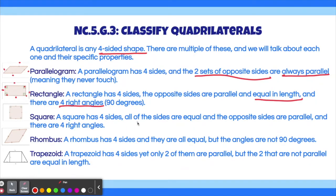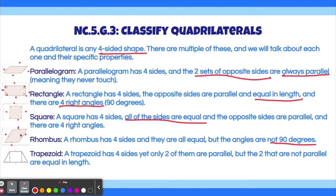Now we have a square. A square has four sides, all sides are equal, the opposite sides are parallel, and there are four right angles. The most distinguishable fact about a square is that all sides are equal: one, two, three, and four are all the same length, and there are four right angles, just like a rectangle. So a square is essentially a rectangle where all the sides are the same. A rhombus also has four equal sides, but the angles are not 90 degrees. So a rhombus has all equal sides like a square, but it is not a square because it doesn't have 90-degree angles. A trapezoid has four sides, but only two of them are parallel, and the two that are not parallel are equal in length. These two sides are parallel but not equal in length, and the other two sides are not parallel but are equal in length.